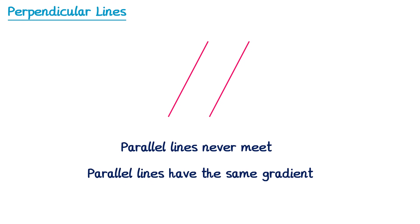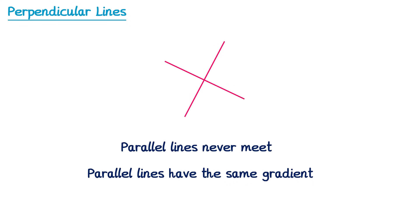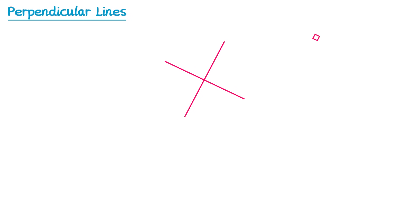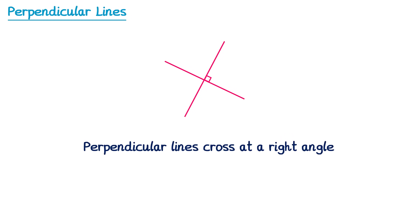But what about perpendicular lines? A line is perpendicular to another one if it crosses it, specifically at a right angle — so 90 degrees. Perpendicular lines cross at a right angle.